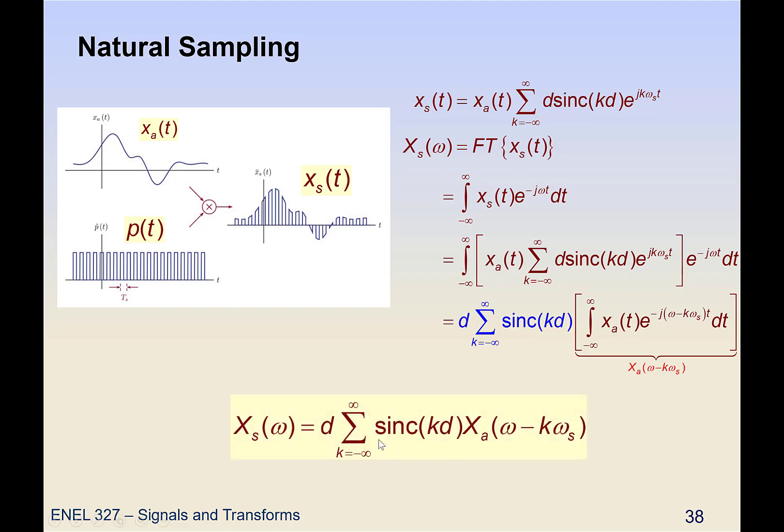So we actually get an expression which is very similar to the impulse train sampling. But rather than a constant in front, we now have a sinc function in front.